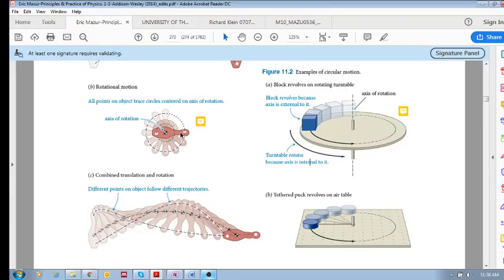So for example, this pin, this bowling pin, this pin rotates because the axis of rotation basically it's coming out of the page towards you. Okay, so this guy is rotating because the axis of rotation is internal to the object, whereas in this case the axis of rotation was external.